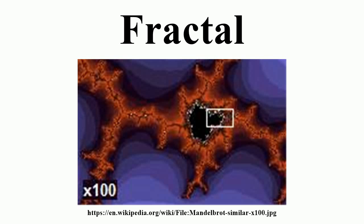The feature of self-similarity, for instance, is easily understood by analogy to zooming in with a lens or other device that zooms in on digital images to uncover finer, previously invisible, new structure. If this is done on fractals, however, no new detail appears, nothing changes and the same pattern repeats over and over, or for some fractals, nearly the same pattern reappears over and over.